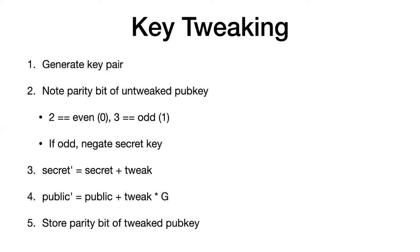After you tweak the public key, you also need to store the parity bit, because after tweaking you'll have a compressed 33-byte public key. In order to do a script path spend — not a key path spend — you're going to need to provide the parity bit as part of your control block, whose structure I'll be talking about in a later slide.